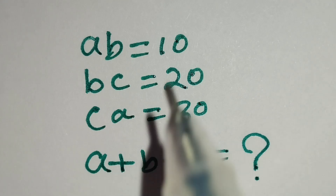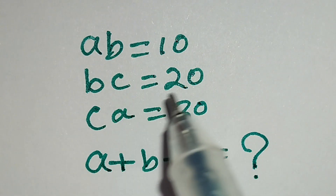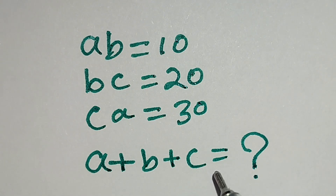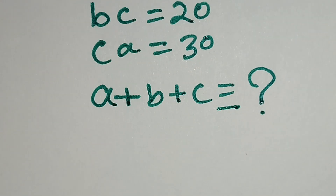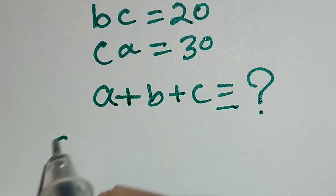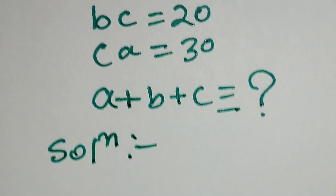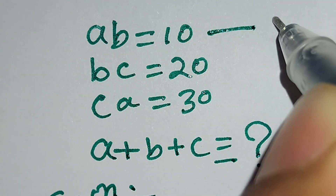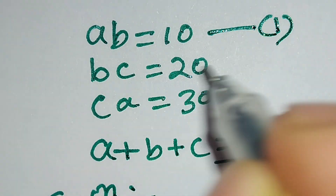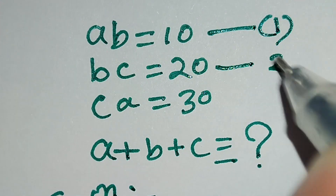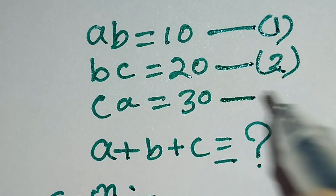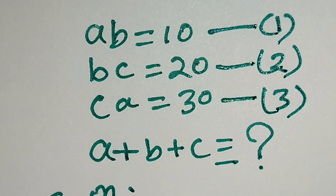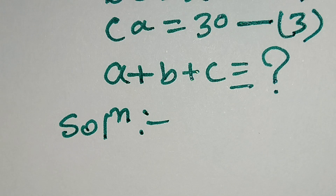Hello, this is a nice math problem. AB is equal to 10, BC is equal to 20, CA is equal to 30, and we have to find the value of A plus B plus C. So let's start the solution. The given equations are: AB equals 10 (equation 1), BC equals 20 (equation 2), and CA equals 30 (equation 3).